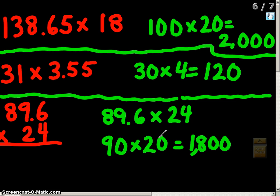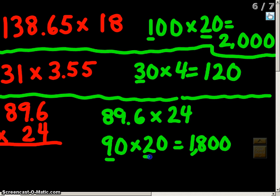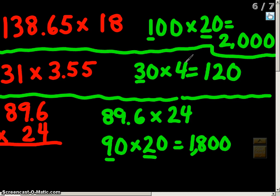This is how you estimate decimals. It's important to remember the key tip we talked about at the beginning: whenever you round, you only ever have one digit with any type of value. You won't have multiple digits with value in each number — just one digit. Everything else is either zero or it's just a single digit. Please come and see me if you have any questions about estimating decimals.